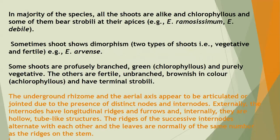In the majority of the species, all shoots are alike and they are chlorophyllous, with some bearing strobili at their apices — for example, Equisetum ramosissimum. But sometimes shoots show dimorphism, meaning they possess two types of shoots: one completely vegetative and another bearing strobili, that is the fertile shoot — for example, Equisetum arvense.